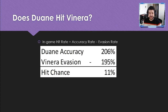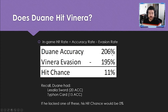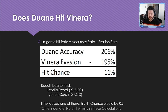Applying the formula: Duane's 206 accuracy minus Venera's 195 evasion gives only an 11% chance to hit her from the front. This changes based on attack direction. Importantly, if Duane had only one of those two external accuracy sources — removing the Lazalia sword's 20% puts him at 186, which is a negative hit chance — it would floor to 0%. Hit chance cannot go negative or exceed 100%; it simply clamps at those values.